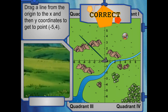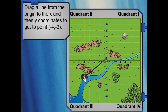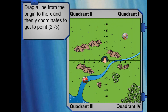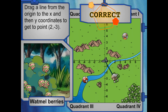Do you see anything here? Maybe the Pokémon around here are taking a nap. Let's check out the river in quadrant 3 — what do you think we'll find there? Drag a line to get to point negative 4, negative 3. Look! What do you see? Magic card. We haven't checked out the forest in quadrant 4. Let's go there. Drag a line to the X, then Y coordinates to get to point 2, negative 3. Look! What do you see? Berry bushes. But no Pokémon here.